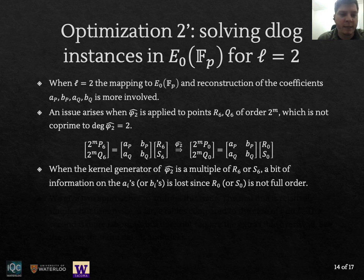So basically, what can happen is that the kernel generator of the isogeny φ_2 may be a multiple of any of these two points, R6 or S6. And in this case, the resulting points, the image points R0 or S0, is not going to be a full order point. So we may lose some information about the coefficients A's and B's.